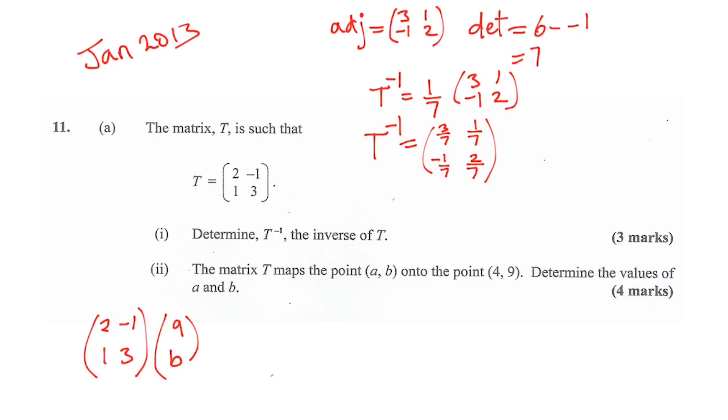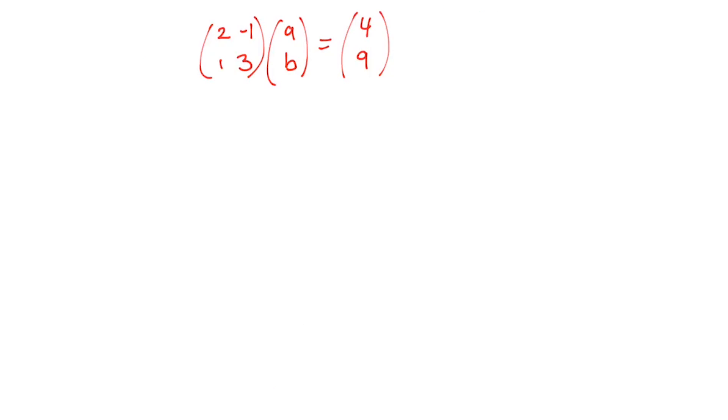So what I'm going to do is put T first because it's matrix multiplication, so it's important that the 2x2 matrix goes first. And A, B, so T is happening to A, B, equals 4, 9. That's the setup right there. Remember, this is the transformation matrix. This is the initial matrix that we had, the object. And this is the image after the transformation.